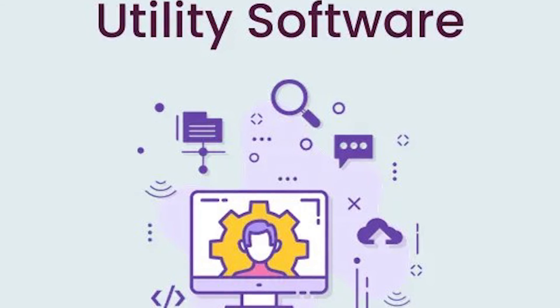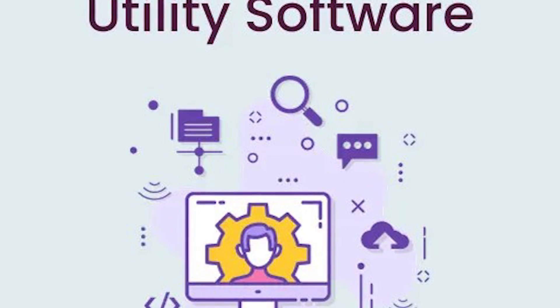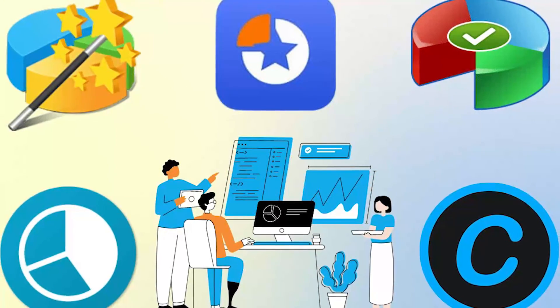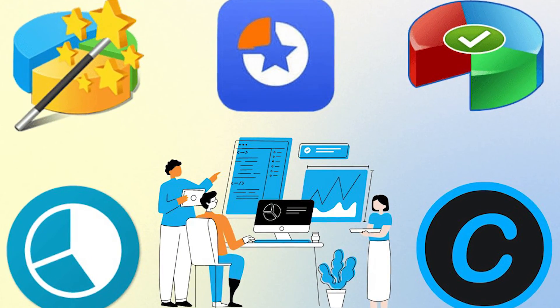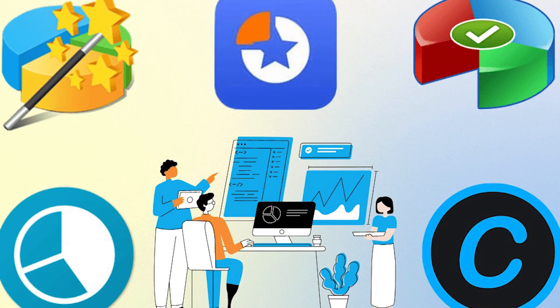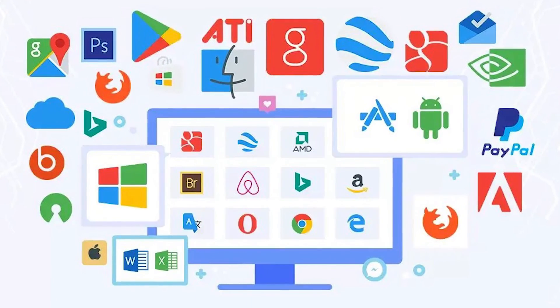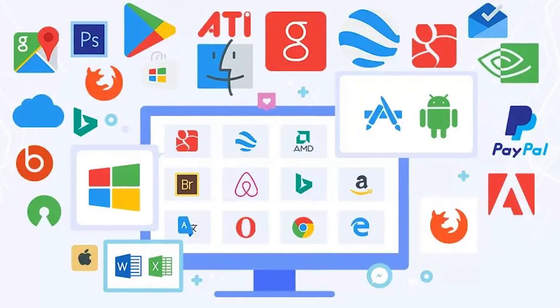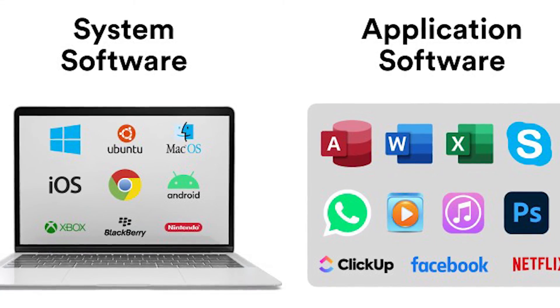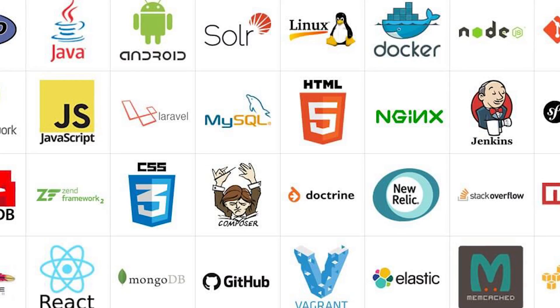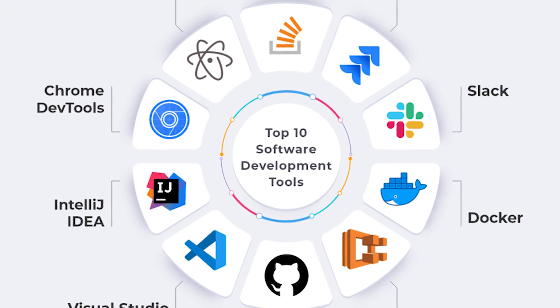Finally, we have utility software. Utility software helps maintain and optimize the performance of your computer. It includes antivirus software, backup utilities, and disk cleaners. In summary, software is a set of instructions that powers computers and mobile devices. The main types are system software, application software, development tools, and utilities, each serving a very important role. Understanding software types is key to understanding computers effectively.